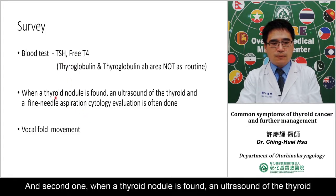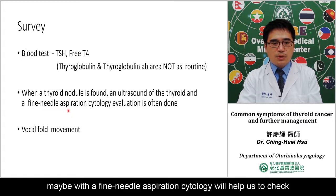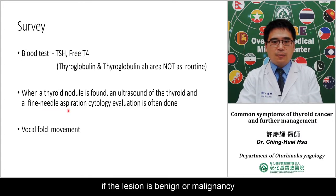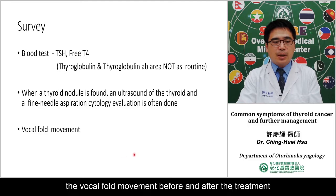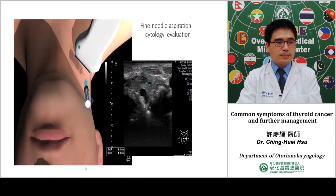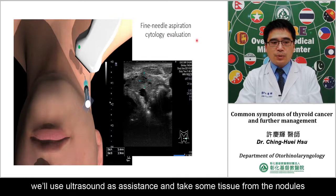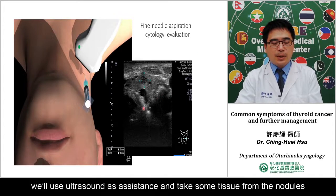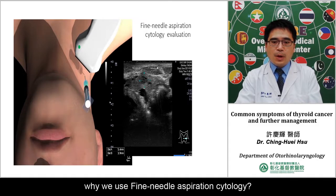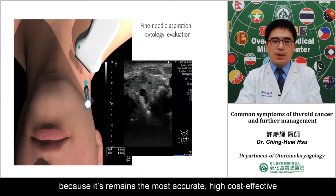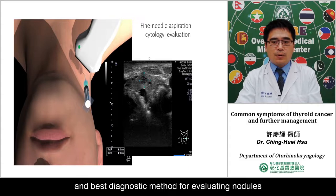Second, when a nodule is found, ultrasound of the thyroid combined with fine needle aspiration cytology will help us check if the lesion is benign or malignant. Third, we need to assess vocal fold movement before and after treatment. Fine needle aspiration remains the most accurate, cost-effective, and best diagnostic method for evaluating nodules.